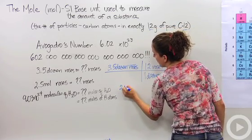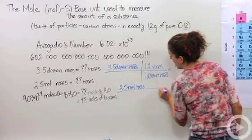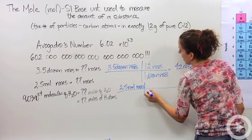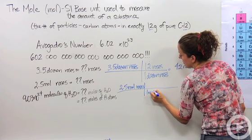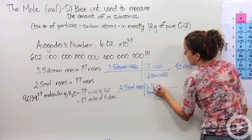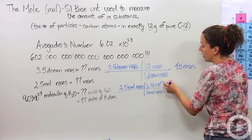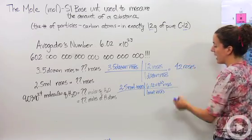So we say 2.5 moles of roses. One mole of roses is 6.02 times 10 to the 23rd roses. Right? Because one mole equals that many roses. That unit can cross out, we're left with roses.